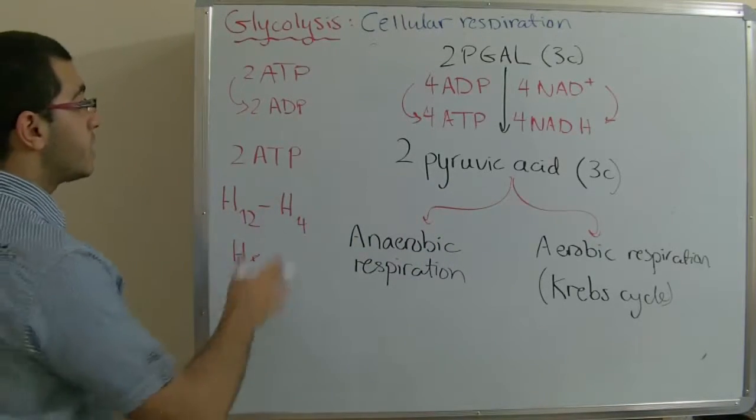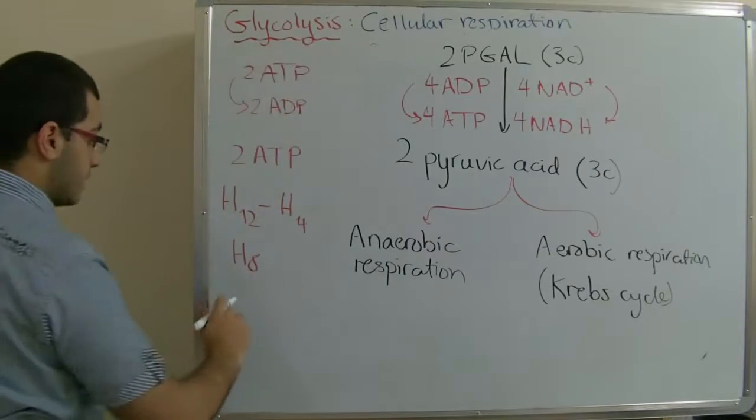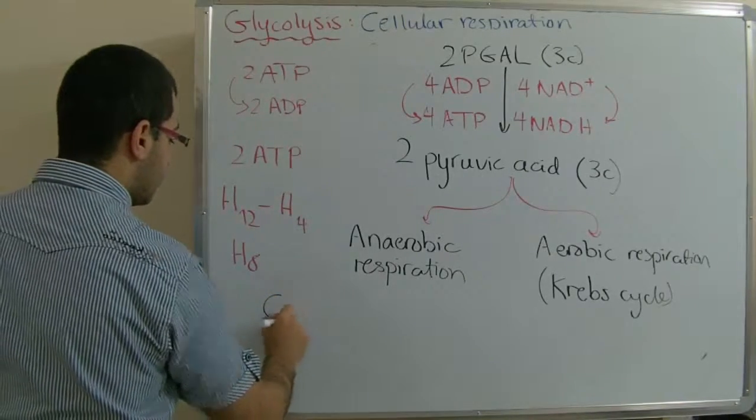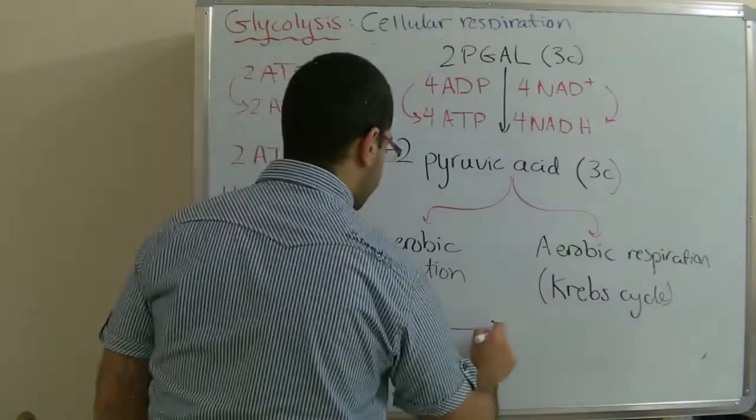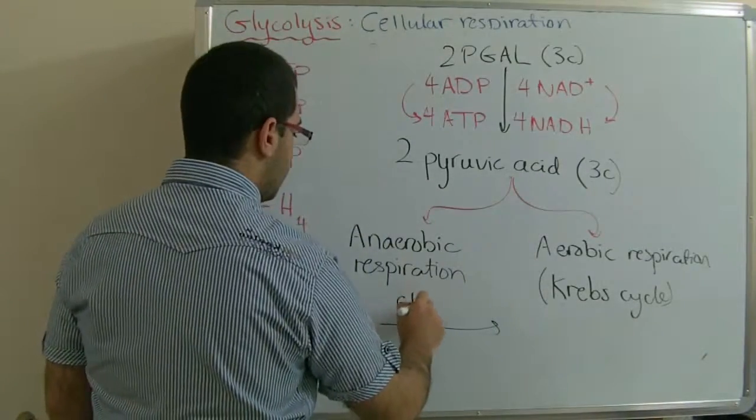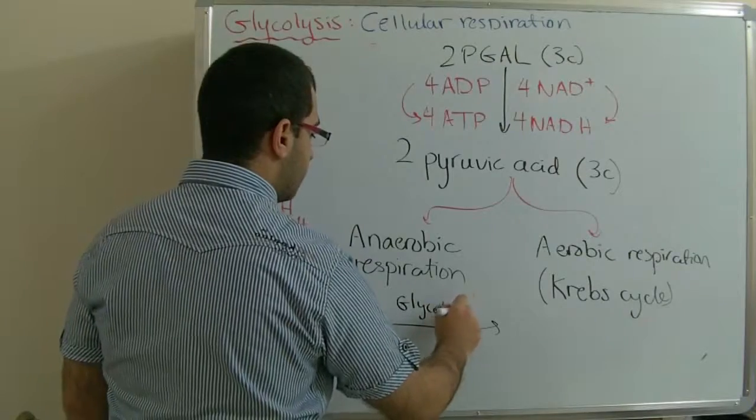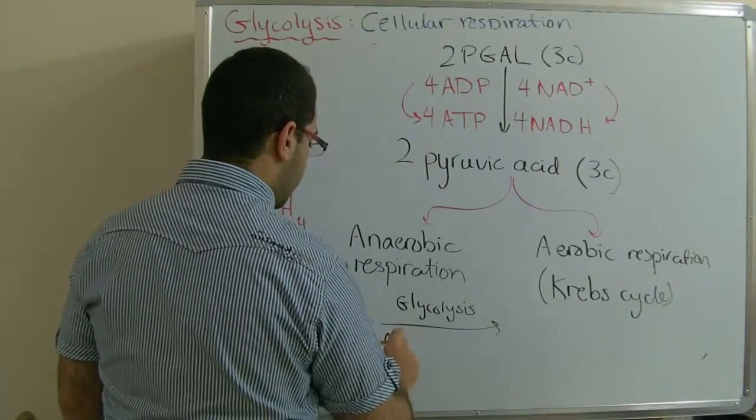So, the chemical equation which illustrates the process of glycolysis is C6H12O6, which is a glucose molecule, undergoes glycolysis in the aerobic conditions.